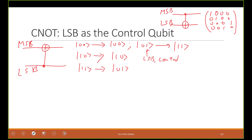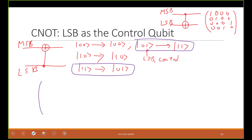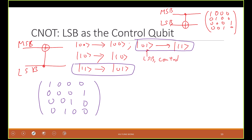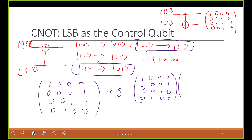For |11⟩ you get |01⟩. So you see it keeps everything the same except it swaps these two: |11⟩ becomes |01⟩ and |01⟩ becomes |11⟩. In the matrix, naturally you will find that the second and fourth rows are swapped. You can apply this matrix to one of the basis states to check — for example apply it to |10⟩.